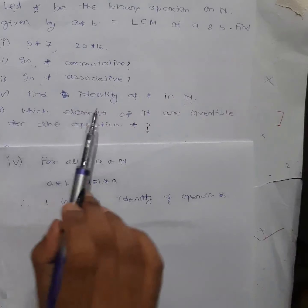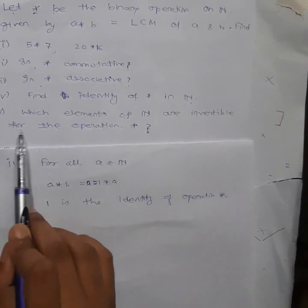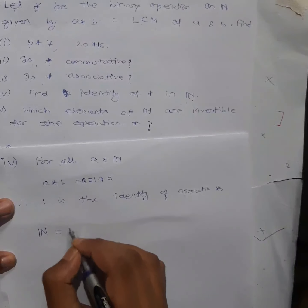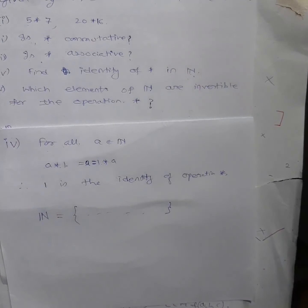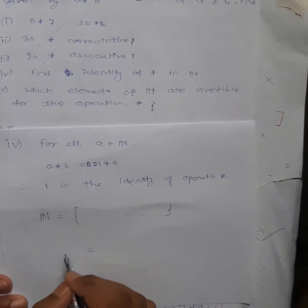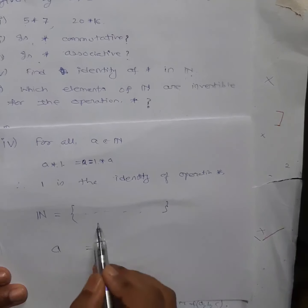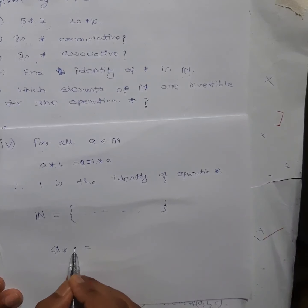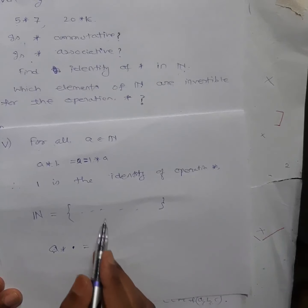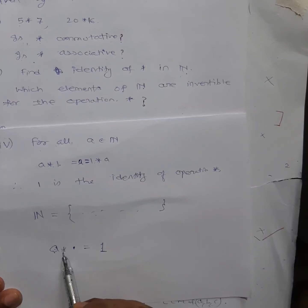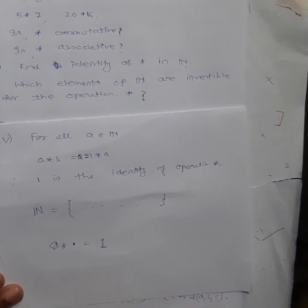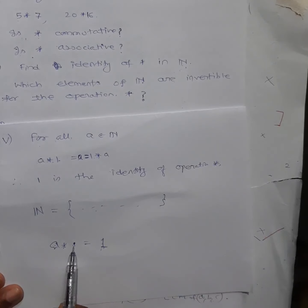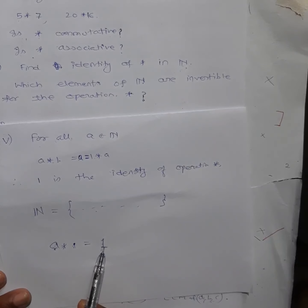Now the last question: which elements of the set of natural numbers are invertible for the operation ★? Remember the definition of invertible: A is called invertible if there exists B belonging to the set of natural numbers such that A★B gives you the identity element. The identity here is 1. So A will be called invertible if you can operate A with some element B and get back 1.